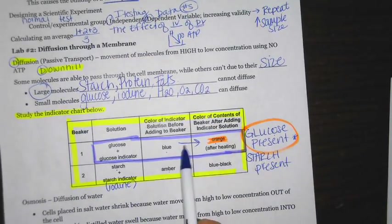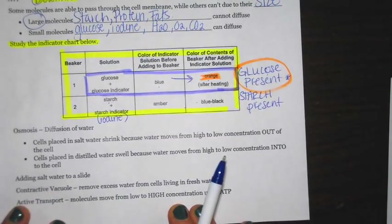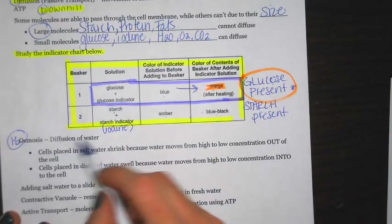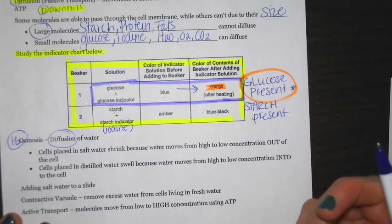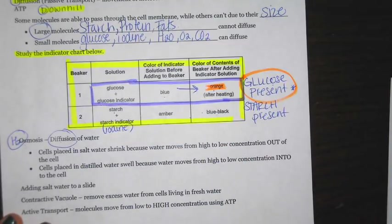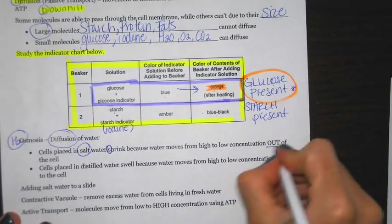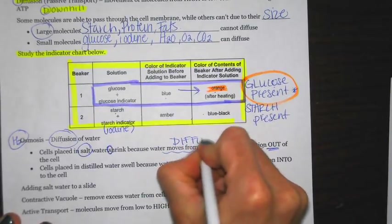Make sure you look over the indicators a couple of times, as people frequently struggle with them. Next up we have osmosis — think of it as H2O-mosis. Osmosis is the diffusion of water. Diffusion refers to the movement of any small molecule from high to low, and that includes water. Cells placed in salt water are going to shrink, because water moves from high to low concentration out of the cell — you could simply say water diffuses out of the cell.